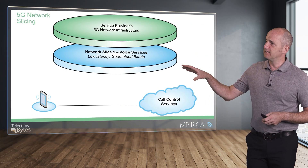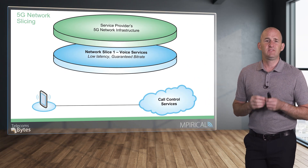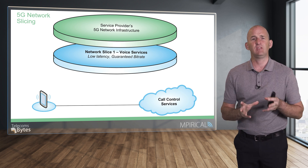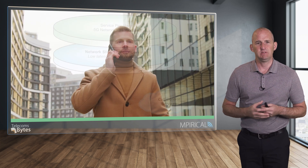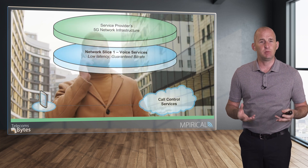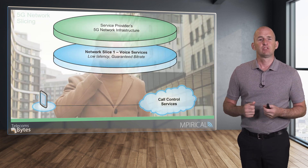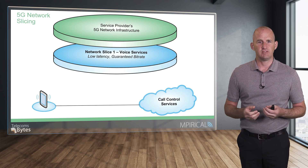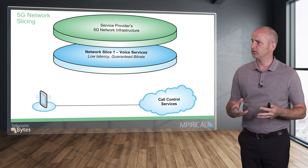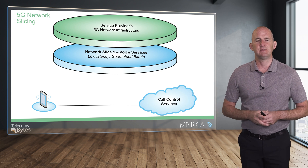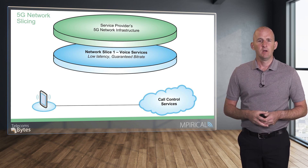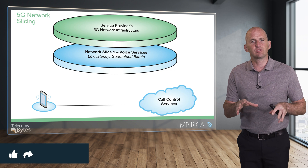For this particular network slice, we've designed a slice specifically for a use case which happens to be voice services. When we design the slice, we design it with specific attributes and characteristics. So the slice for voice services is going to be very centric towards low latency, guaranteed bit rate type data delivery. But that's potentially just one customer.